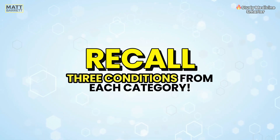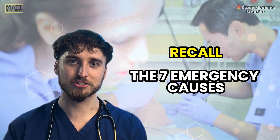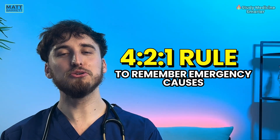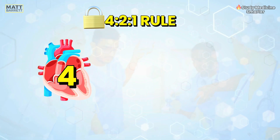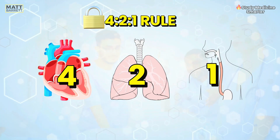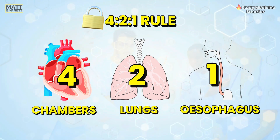Let's talk about the emergency chest pain presentations. I asked you to comment below as many of the seven emergency presentations for chest pain as you can — it's not too late to do so. These conditions are the most life-threatening and they fall into the categories of cardiovascular, respiratory and GI. Fortunately, there's an excellent way to remember this: the 4-2-1 rule. There are four emergency presentations in the heart, two in the lungs, and one in the GI system. Just remember that you've got four heart chambers, two lungs and one esophagus in the chest.